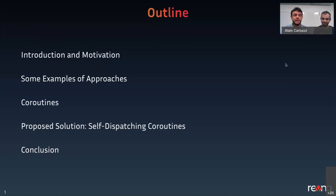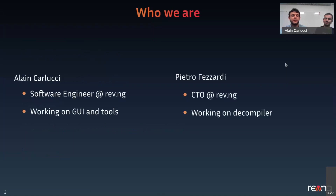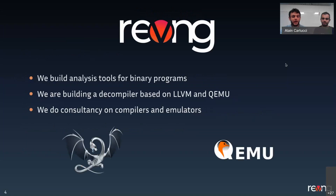Before starting, let me tell you a little bit about us. Both Alain and I work for a company called Revenge. Alain is working on the graphical user interface of our tools. I'm one of the founders and the CTO, and I work on our main analysis tool, which is the compiler. Revenge is a cybersecurity company. We build analysis tools for binary programs, and what we are trying to launch very soon is a decompiler based on LLVM.